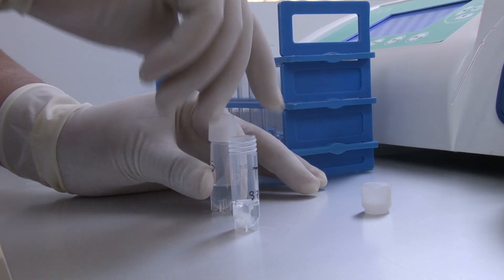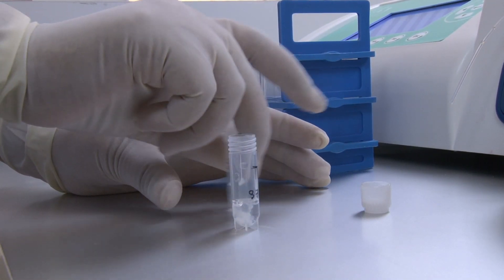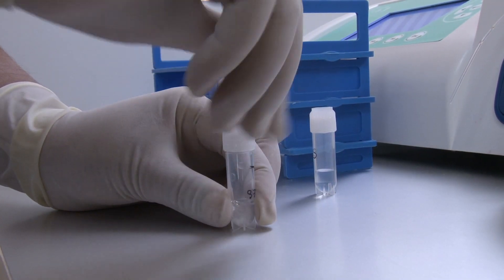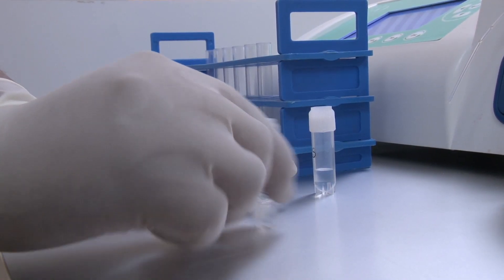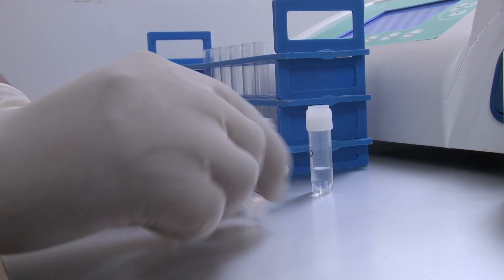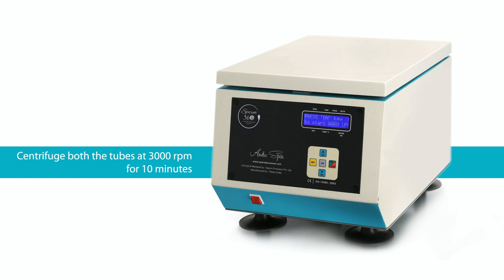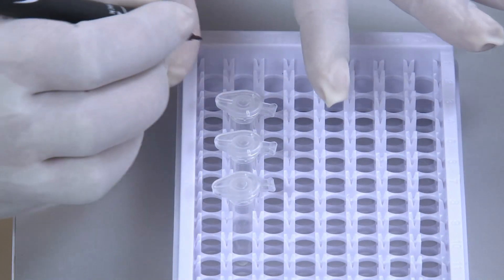Close the tubes with lids and mix them gently. Centrifuge both tubes at 3000 rpm for 10 minutes. Take three micro tubes.